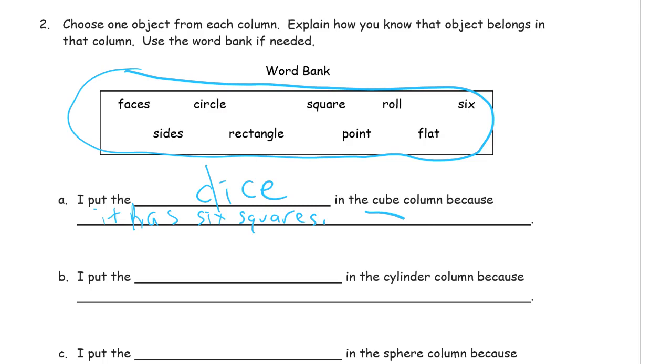And then the next one was the cylinder. So, I put the can, the tomato can, in the cylinder column because let's see, it rolls. It can roll and has flat ends. Right? Because the top and bottom of the can or if you lay it on its side, the left and the right, you know, just depending on how you're looking at it, it's not totally round like the baseball would be.